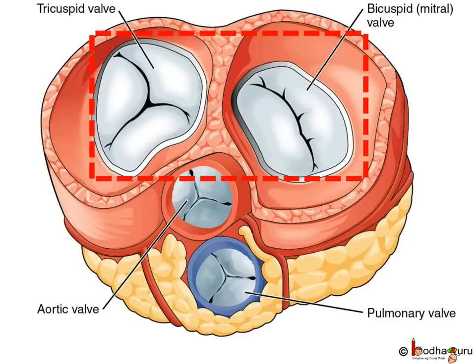When the ventricles contract, blood obviously tries to flow back to the atria. But the atrioventricular valves close to prevent it, causing the first heart sound. This first heart sound is called lub, denoted as S1.